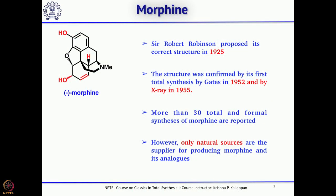However, if this molecule has to be used in treatment — particularly pain-related treatment — people still use only the natural sources, because it can be obtained in huge quantity from natural sources. That is why natural sources remain the major supply for morphine and its analogues.